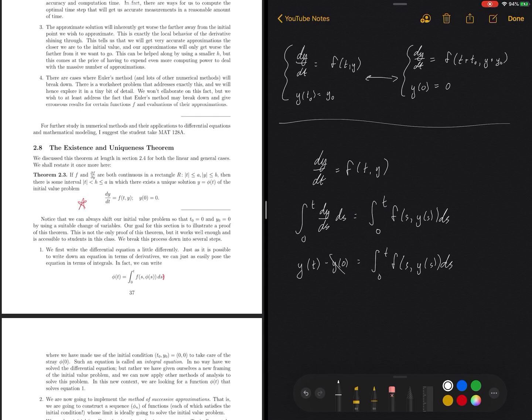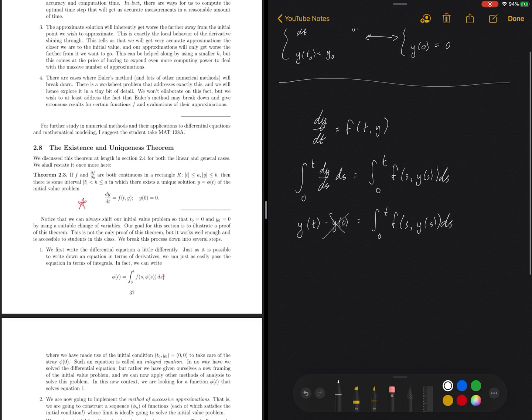We wind up with y(t) minus y(0), and this is going to equal something on the right-hand side that is to be determined—that's the whole point here.